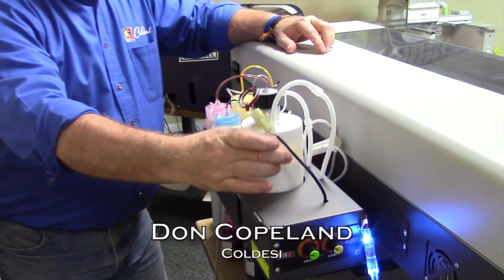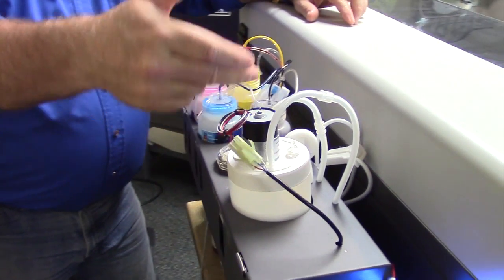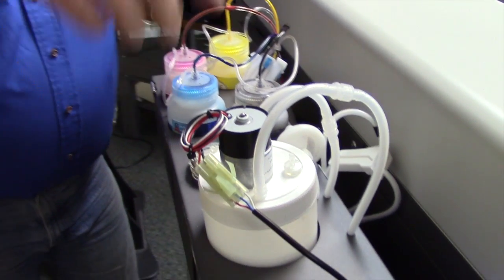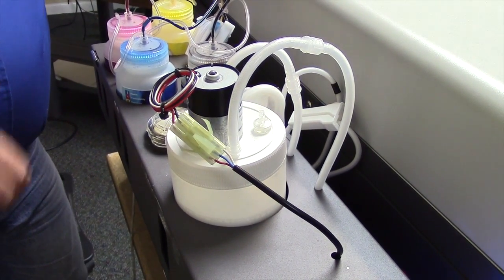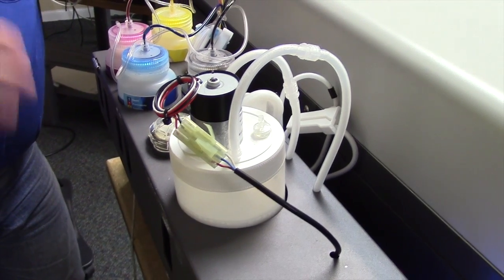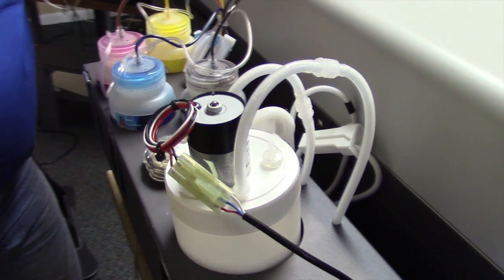The white ink reservoir, which holds your white, as you can see on top here, has a motor with a slow roll agitator that actually spins either clockwise or counterclockwise. Every time this activates, it spins in the opposite direction so you don't get any particles falling out from the white ink.